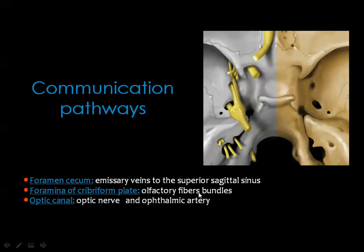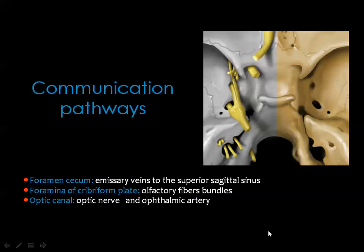The communication pathways between the intra- and extracranial areas include: the foramen cecum, which may contain an emissary vein and is usually obliterated by fibrous tissue; the foramina of the cribriform plate of the ethmoid, which transmits the olfactory fibers; and the optic nerve canal, which transmits the optic nerve as well as the ophthalmic artery. The anatomic details of the anterior skull base include the cribriform plate, the olfactory fossa, the lateral lamella, the fovea ethmoidalis, the bony nasal septum, and the middle turbinate.